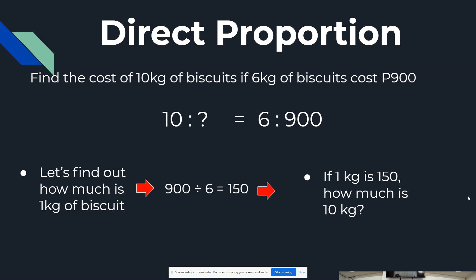Therefore, if 1 kilogram is 150, we will now find out how much 10 kilograms costs by multiplying 10 by 150, and we will get 1,500.